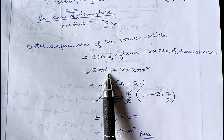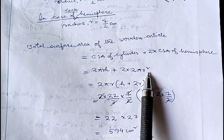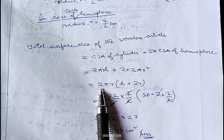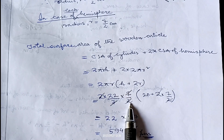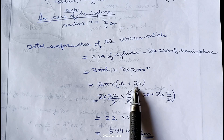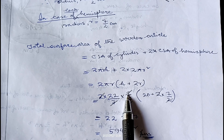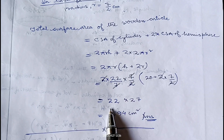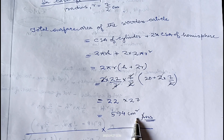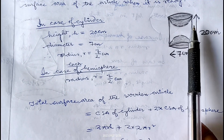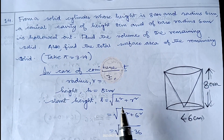For cylinder it is 2 pi r h and for hemisphere it is 2 pi r squared. Taking 2 pi r common gives (h plus 2r). Pi is 22/7, radius is 7/2, height is 20, and 2r is 7. The 7s and 2s cancel, leaving 22 into (20 plus 7) equals 22 into 27 equals 594 centimeter square. Therefore total surface area is 594 centimeter square.